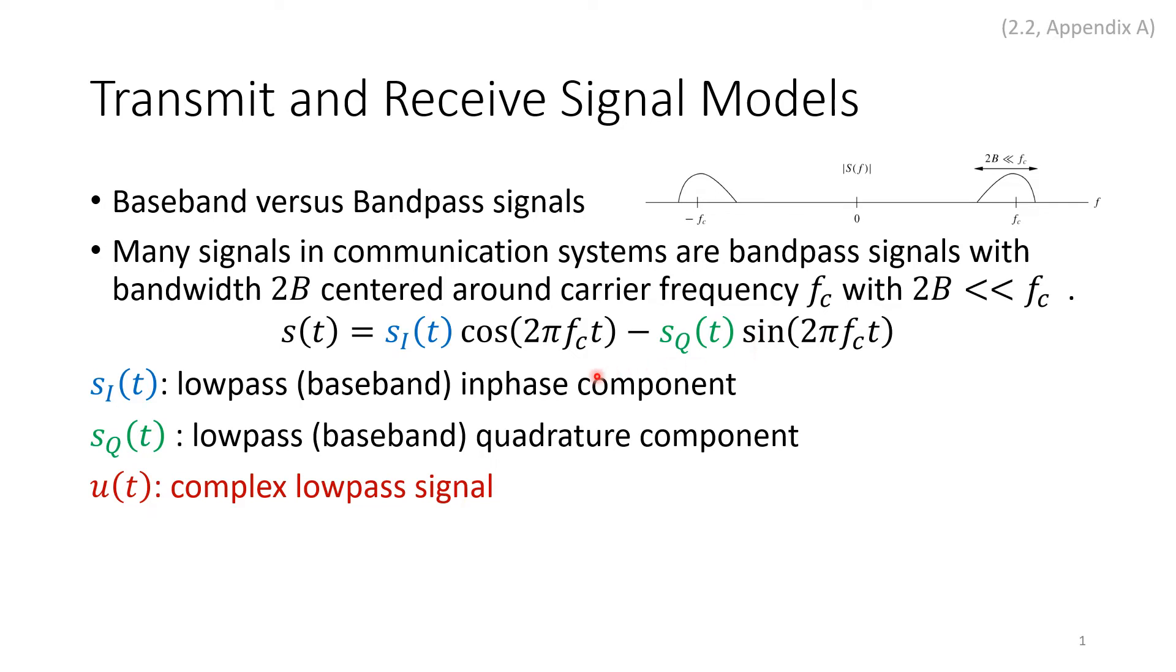But here we have a minus sign, so we have two baseband signals for one signal. This is why we get u(t) to be the complex lowpass signal that represents the two together. It equals the in-phase component plus j times sq. The lowpass equivalent is complex because we have two signals at the same time.